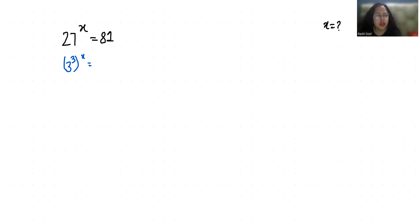Now according to exponent rule, x power m power n equals x power m times n. So 3 power 3x equals 3 power 4.